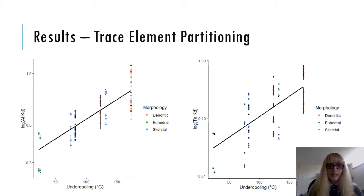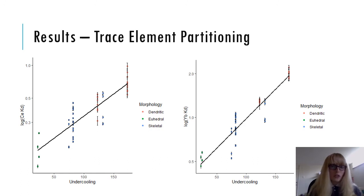So I extracted trace element concentrations from the elemental maps and calculated partition coefficients. On the left, we see that as undercooling increases, the partitioning of aluminium in both aluminium-rich and aluminium-poor regions increase. In the M1 site, tantalum follows similar behaviour. In the M2 site, we see that the rare earth elements behave similarly. The heavy rare earths, such as ytterbium, become compatible at very high undercooling conditions. So about just over 100 degrees of undercooling, we see the ytterbium partition coefficients go above one.